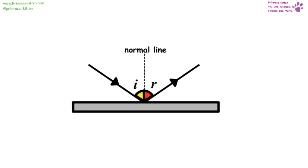When a wave is reflected, it is going to come in, meet the boundary, and then be reflected off. Our angle of incidence is always going to be equal to our angle of reflection. So we can always say that I equals R.